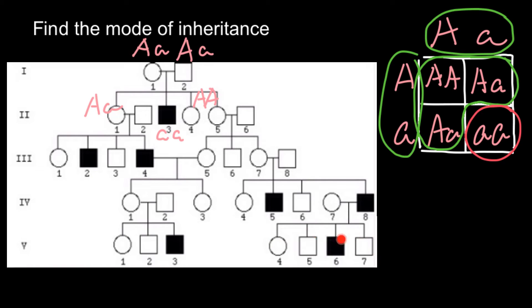There is one place where we do not see a skipped generation, and I will explain why. But the general pattern is that this trait can skip generations, and we see that only males are affected — we do not see affected females here. This gives us information that this is an X-linked genetic disorder, specifically X-linked recessive.